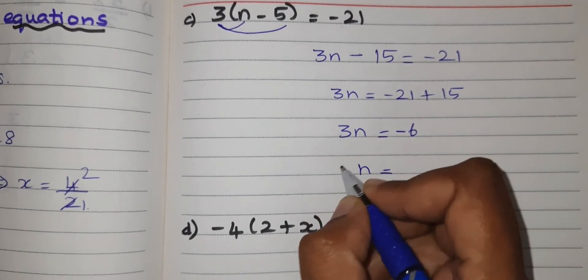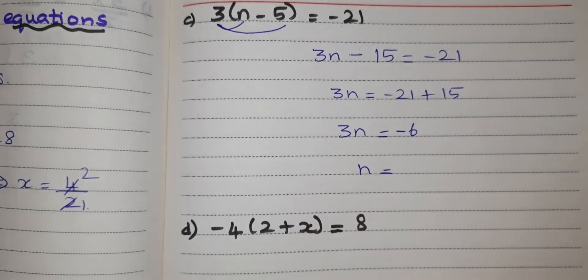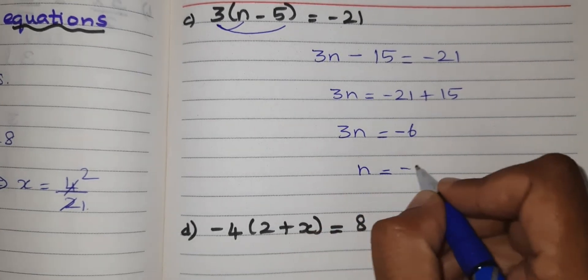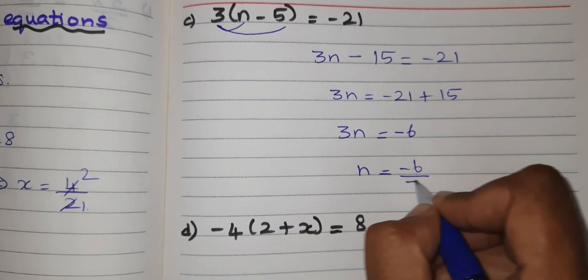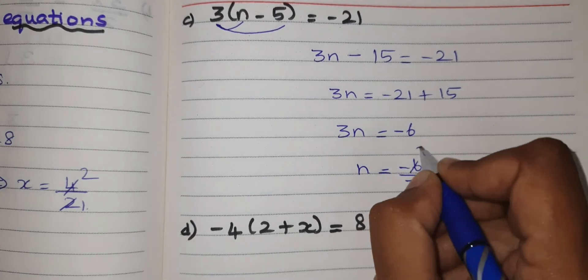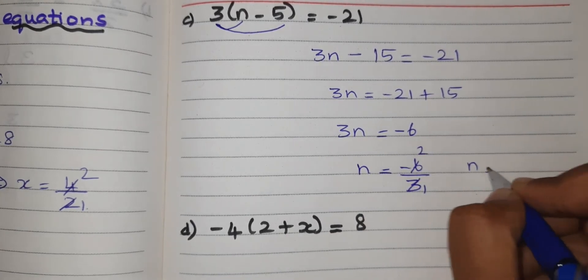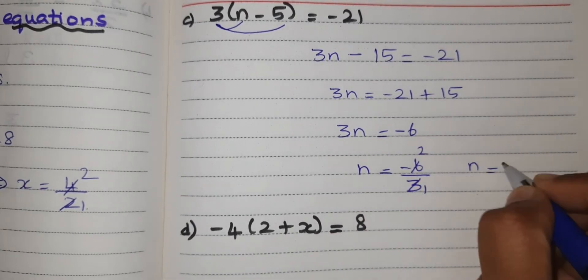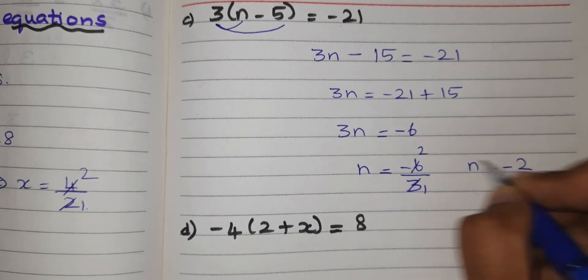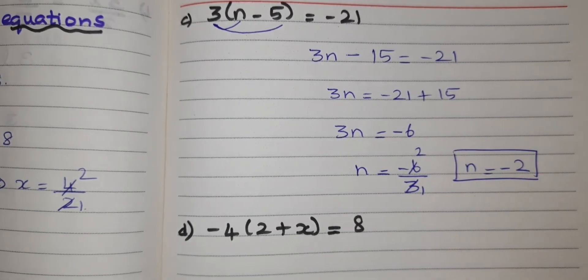If 3 then goes to the other side, it will become division. So minus 6 divided by 3 equals minus 2. The answer is n equal to minus 2.